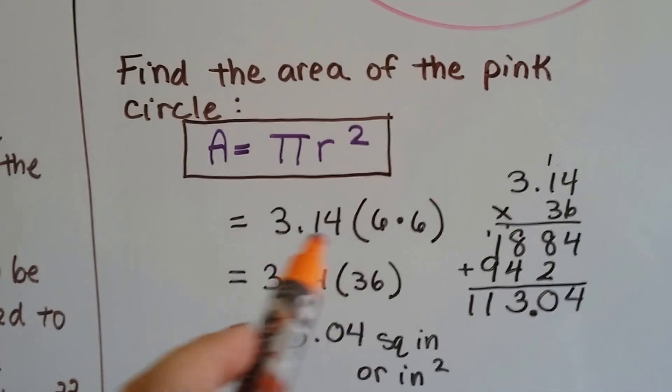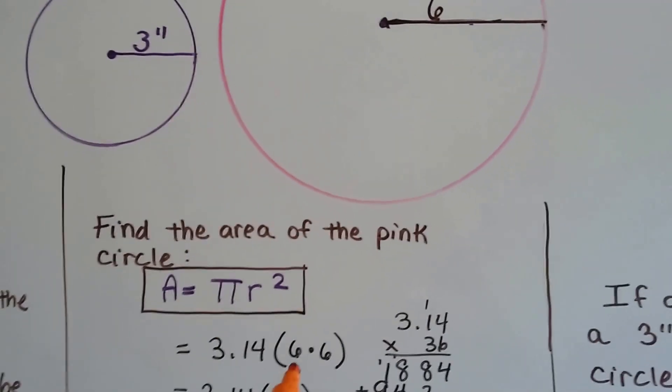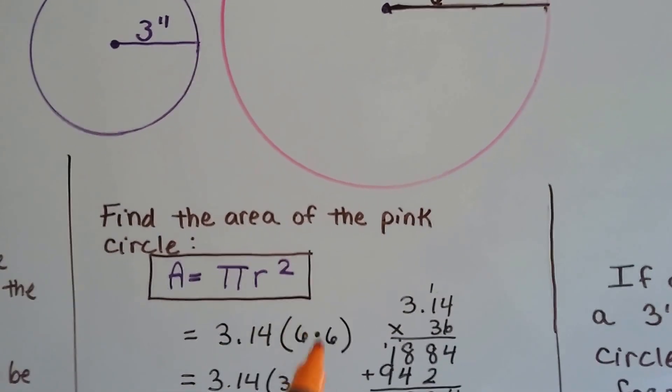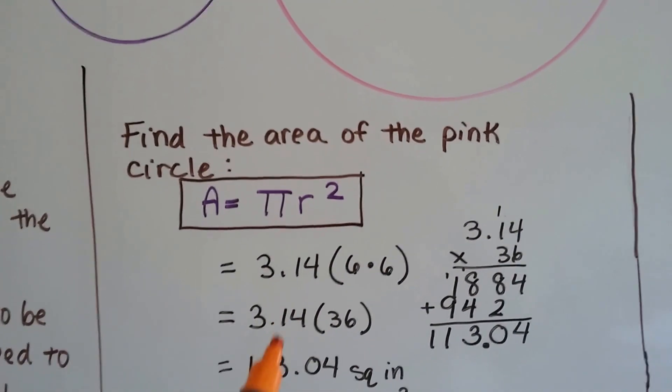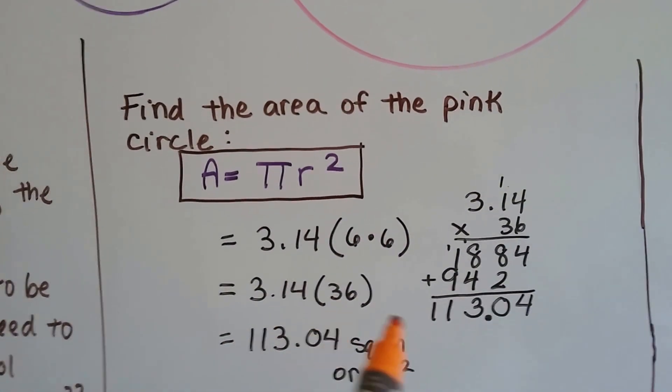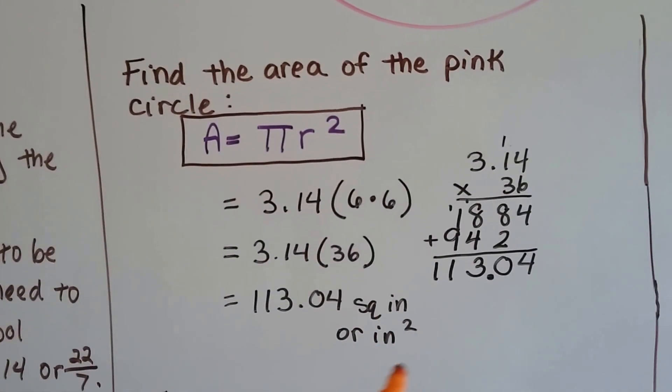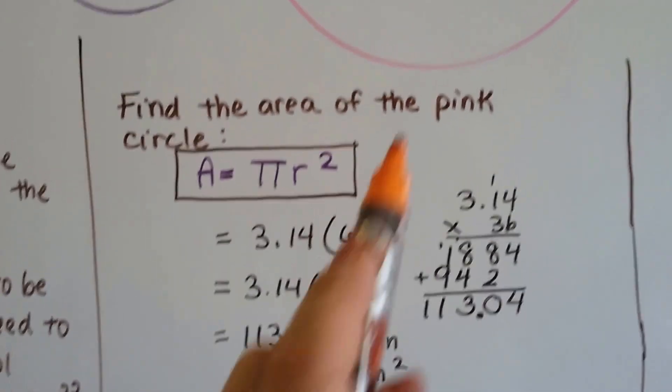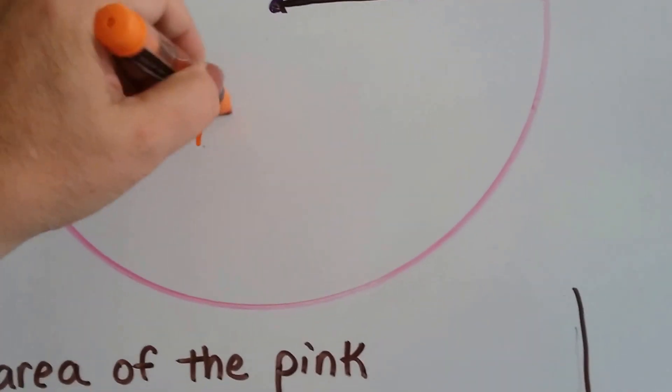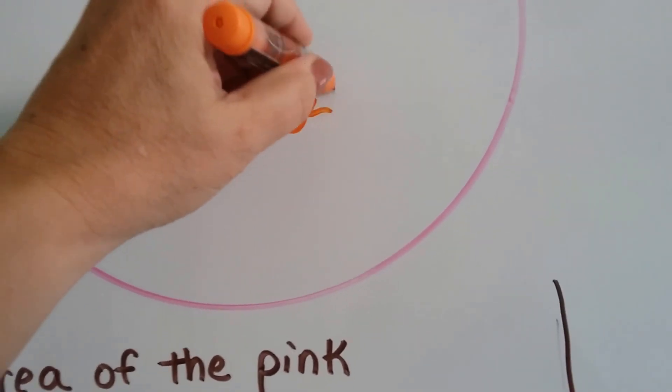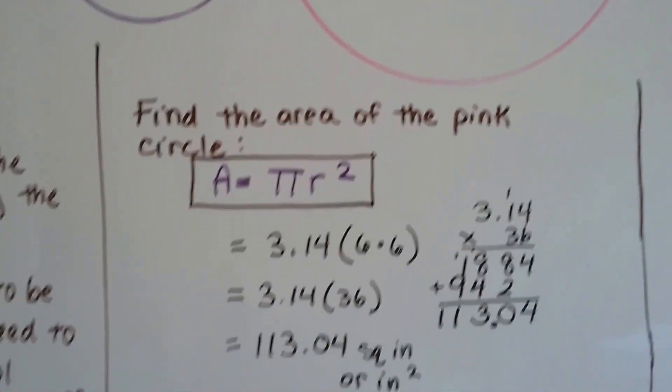Here's our area formula. So, because its radius is 6 inches, we're going to do 6 times 6 for the radius squared. And then we multiply it by pi, 3.14. 3.14 times 36 is 113.04 square inches or inches squared. That's the area of this one. It's 113 and 4 one-hundredths inches squared.